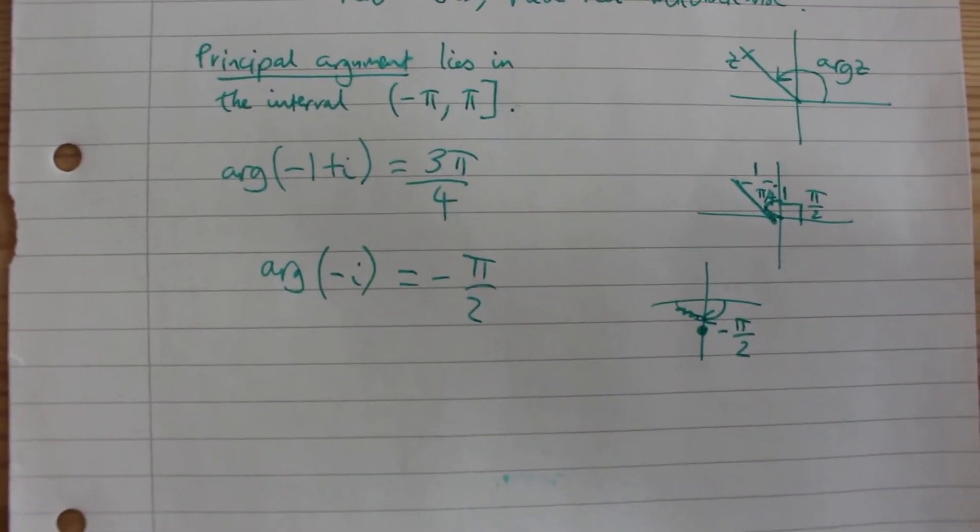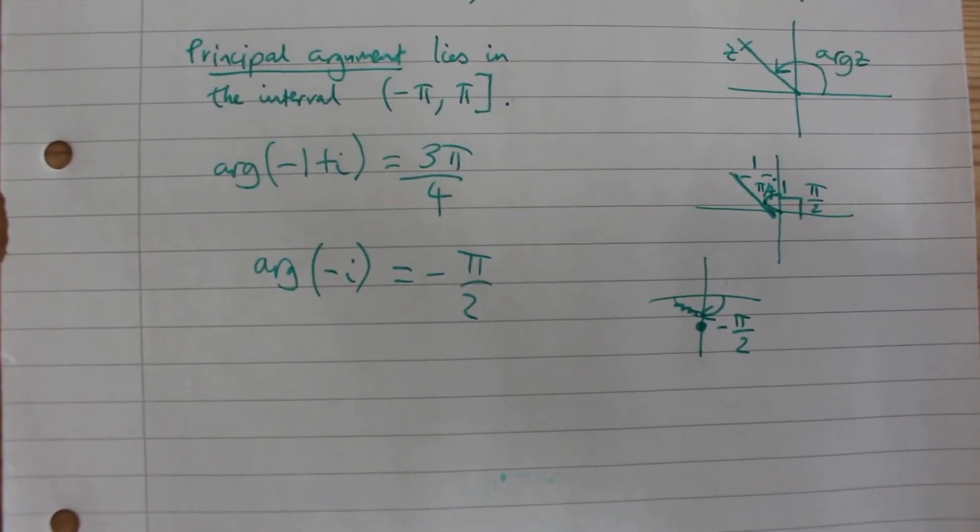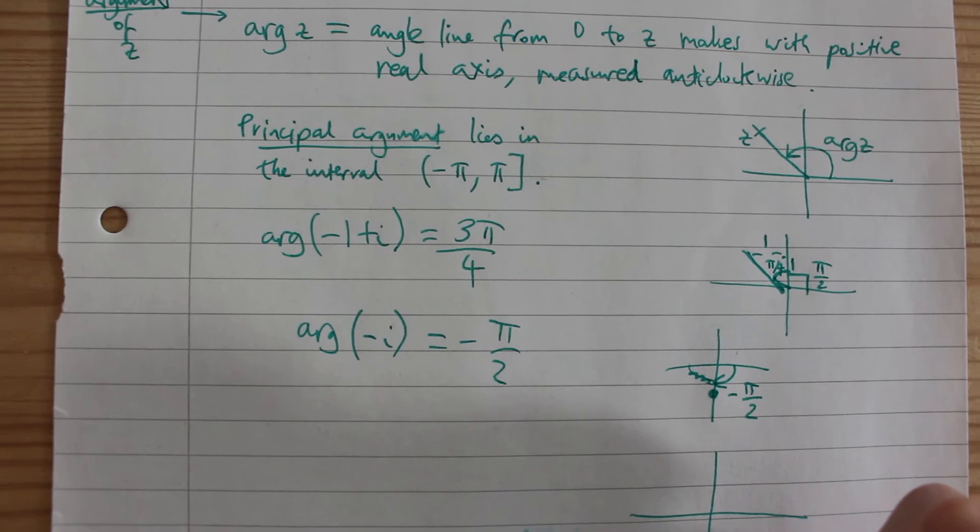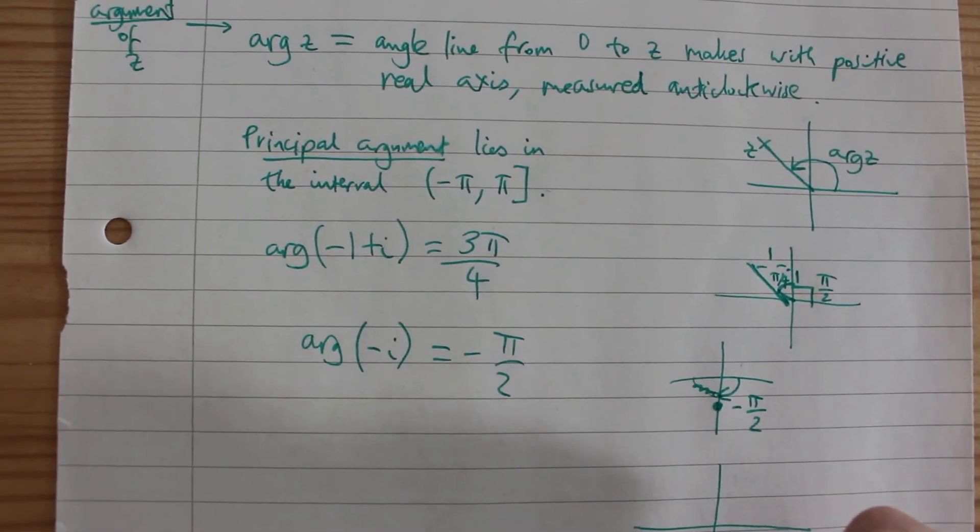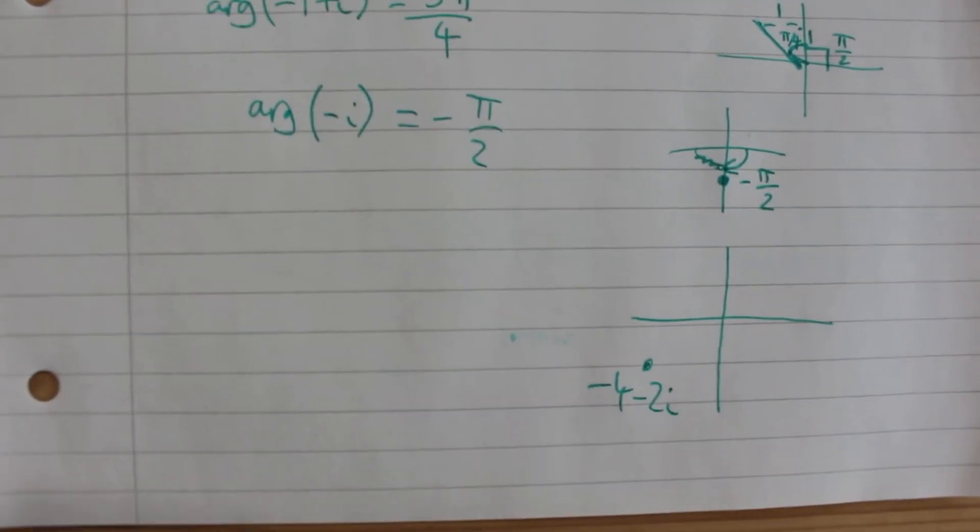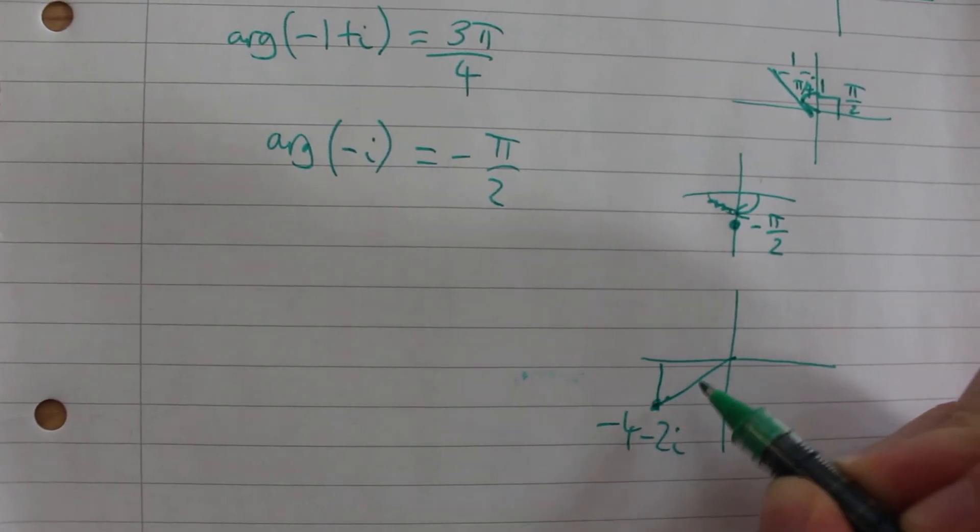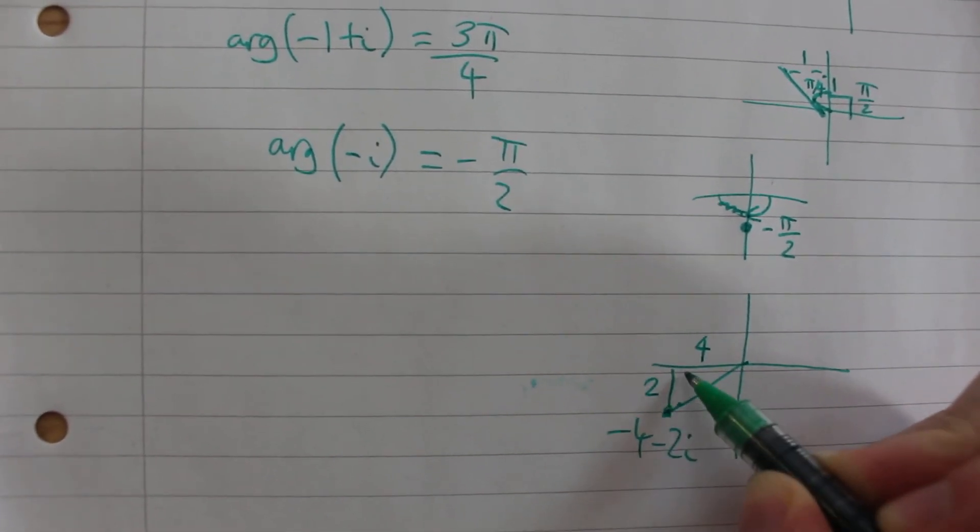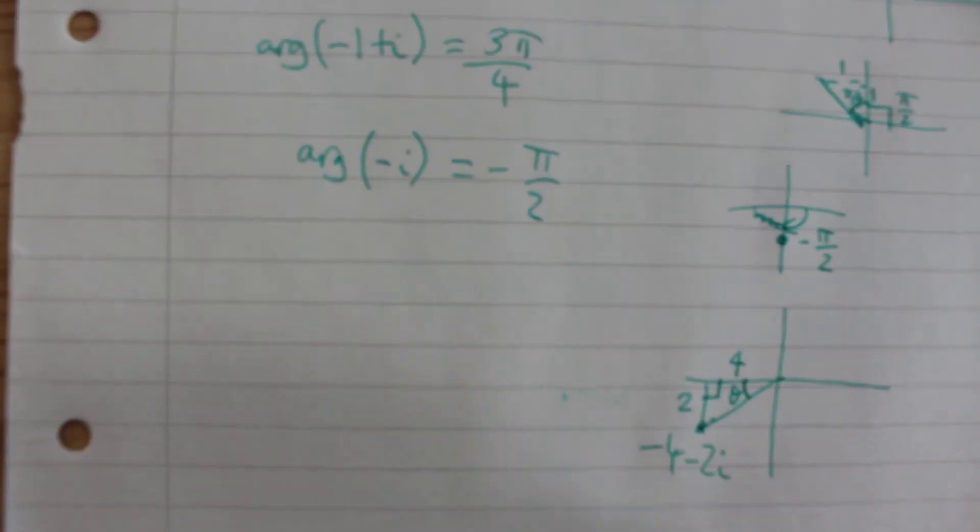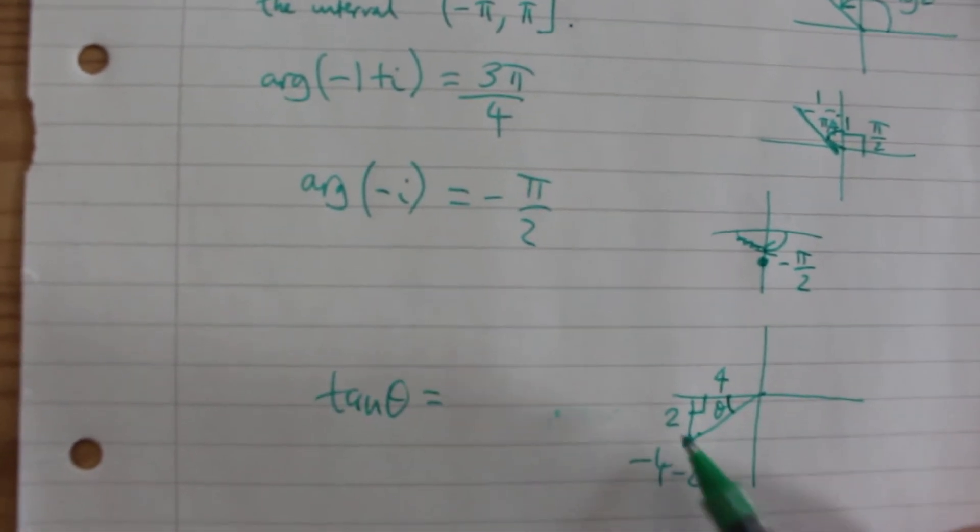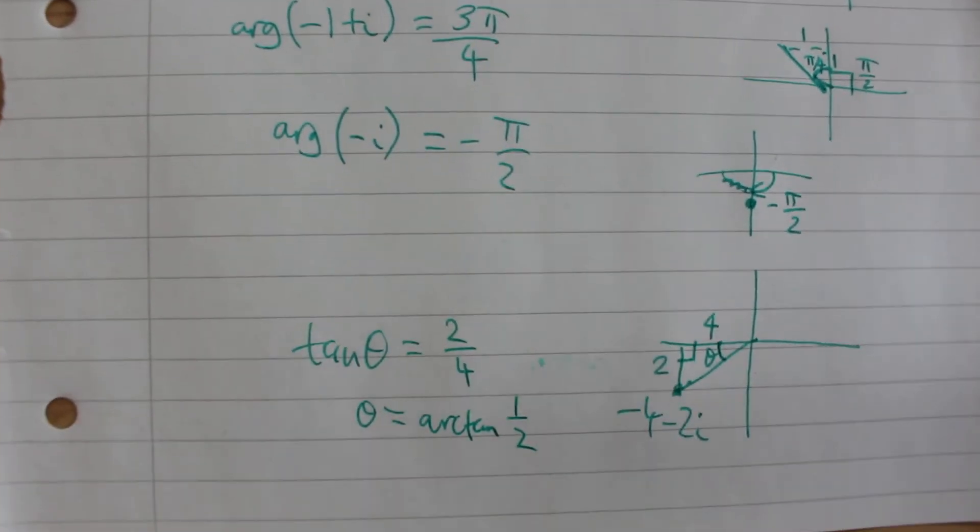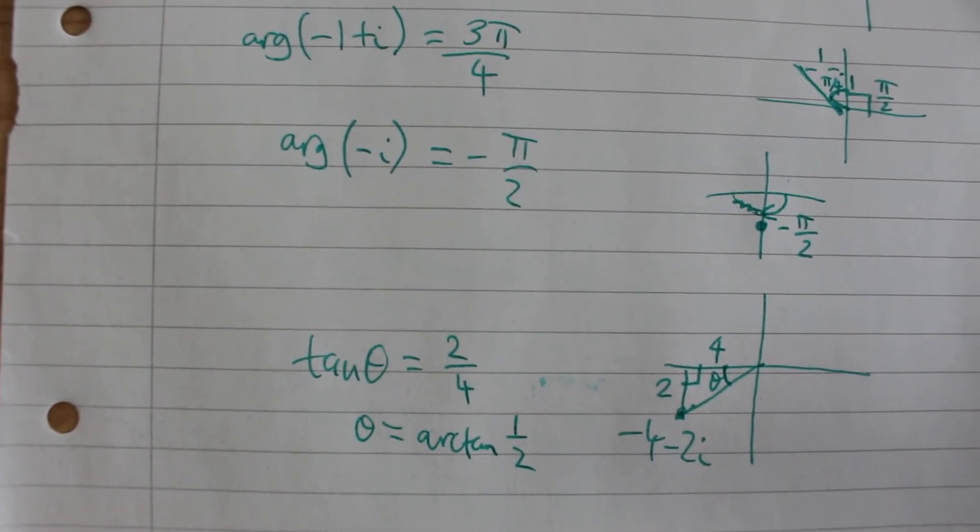In general to find the argument of a complex number we need to use trigonometry. So given a number, let's say down here this time, let's go with minus 4 minus 2i. To find the argument of this complex number we can make a right angle triangle here. This is 4 and this is 2. If we call this angle theta then we have that tan theta is 2 over 4 or a half, so theta is arc tan of a half.